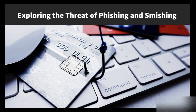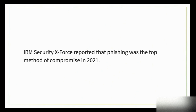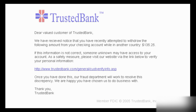Phishing is designed to trick users into sharing sensitive personal information like usernames, passwords, and credit card details with attackers. It has been around since the 1990s but remains strong — IBM Security X-Force reported phishing was the top method of compromise in 2021. The most common technique is sending a fraudulent email designed to look like it came from a trusted entity, often containing a manipulated link that appears to go to a real website.